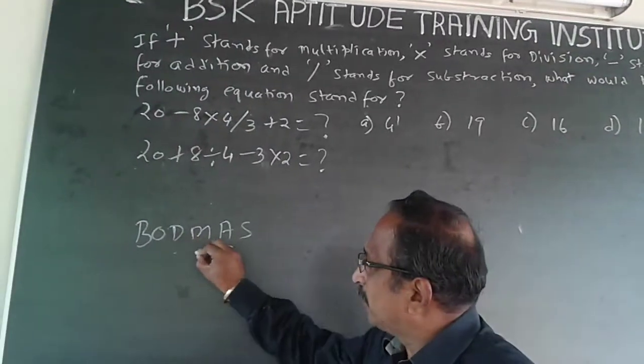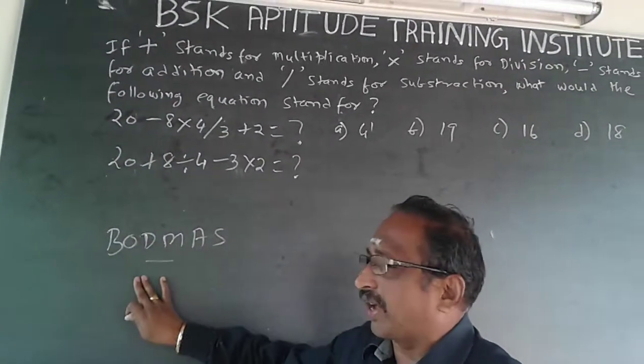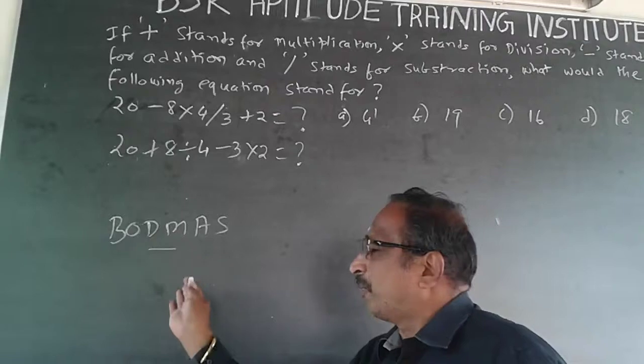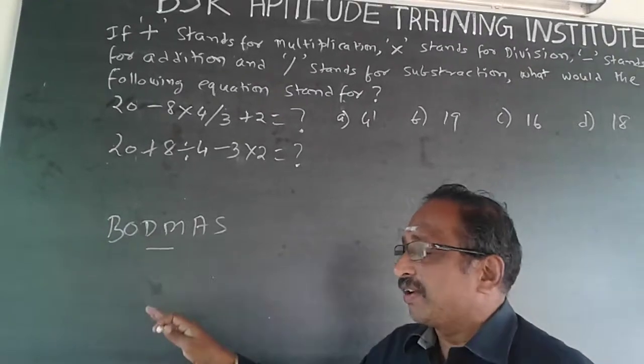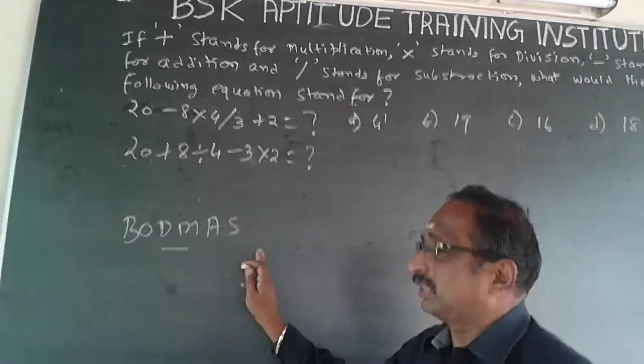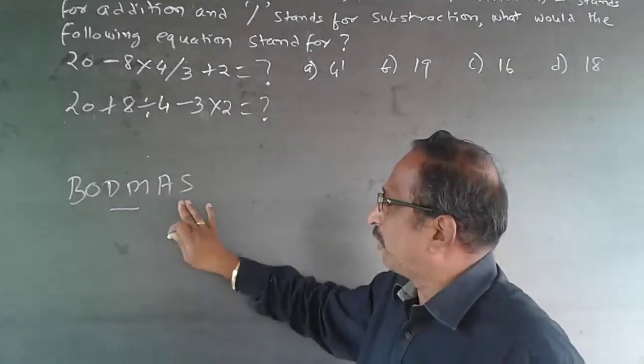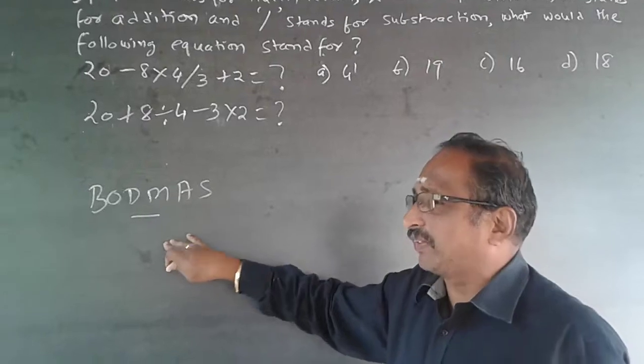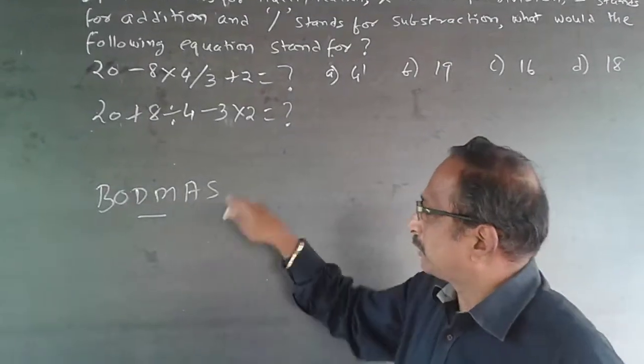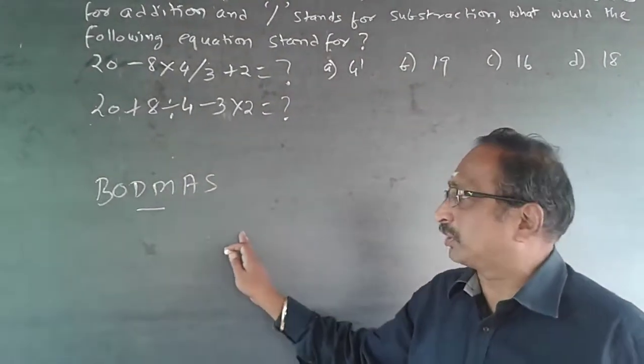See, when you say D and M, both have the same priority. You can do division or you can do multiplication first, either way. But these two will have to be done first before doing addition and subtraction. Similarly, addition and subtraction have equal priority. Addition can be done first, then subtraction can be done, or subtraction can be done, then addition can be done. Either way, it is possible.